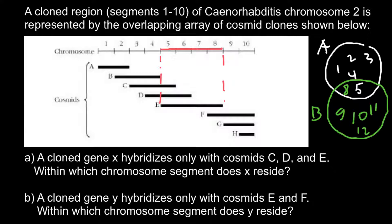And as for cosmid F, I would use a different color. We can project it here, so it would belong to this segment. It would include segments 8, 9, and 10. And you see, in segment 8 we have overlapping of both cosmids, so this is going to be our answer: fragment 8.